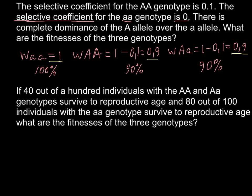Now we can move to the next question. If 40 out of 100 individuals with homozygous dominant and heterozygous genotypes arrive to reproductive age, and 80 out of 100 individuals with homozygous recessive genotypes arrive to reproductive age, what are the fitness values of the three genotypes? I want to warn you that this is not simply going to be 80% and 40%.